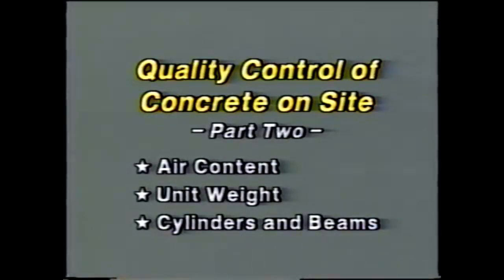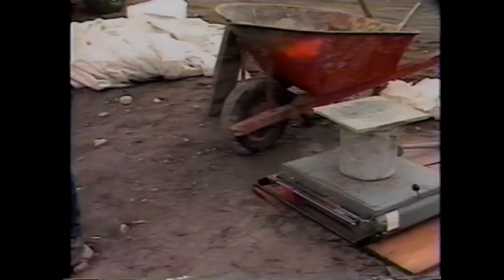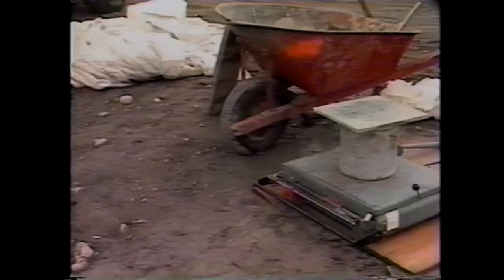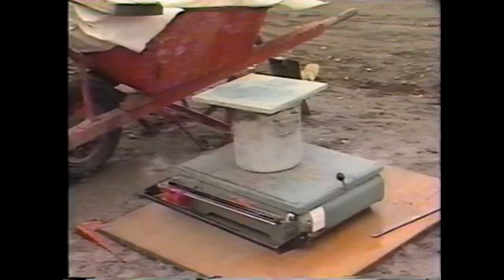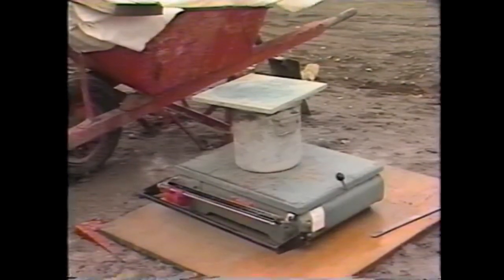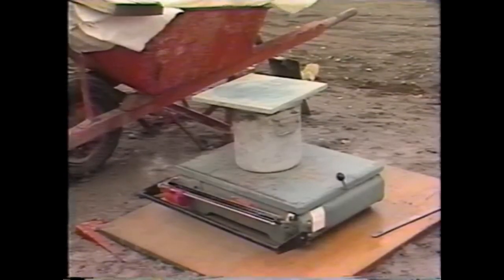Now it's time for the unit weight measurement of fresh concrete. The unit weight, or density, is determined simply by weighing a known volume of the concrete, according to AASHTO T-121. The same equipment used for air content testing is needed, as well as a measuring container, a balance or scale, and a strike-off plate. The balance or scale must be accurate to within three-tenths percent of the test load.